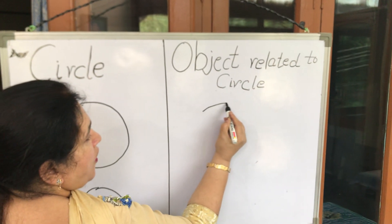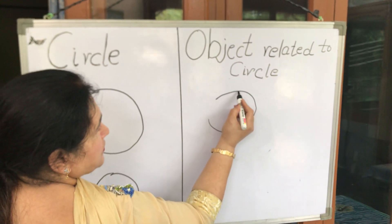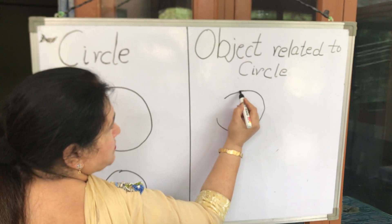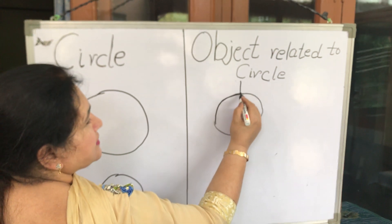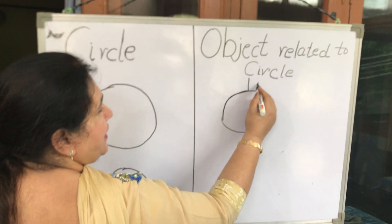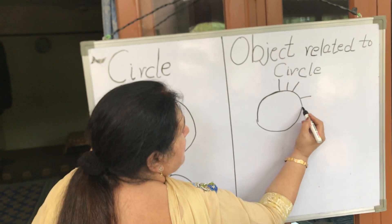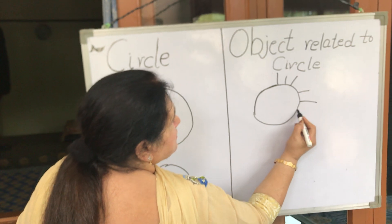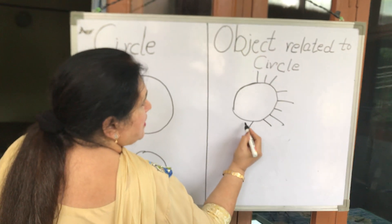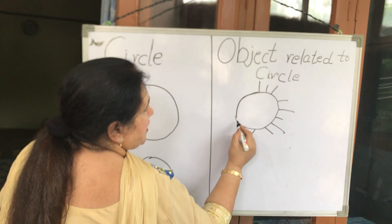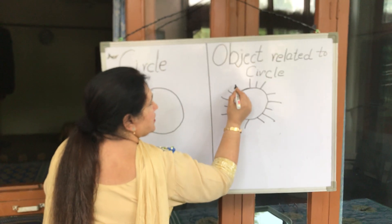Draw a circle. Then draw its rays — one big line, one small, alternating big and small all the way around. This way you have to draw all the rays of the sun.